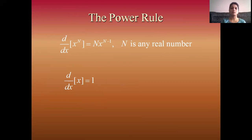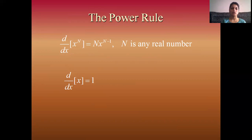First example on the power rule: differentiate x with respect to x, that is d/dx of x. Comparing this with the power rule, the value of N is 1. Substituting 1 into the power rule, you get that the derivative of x is 1.